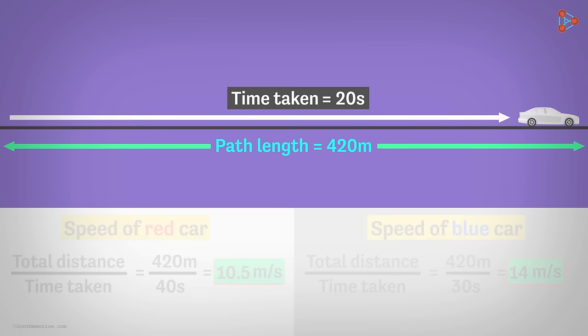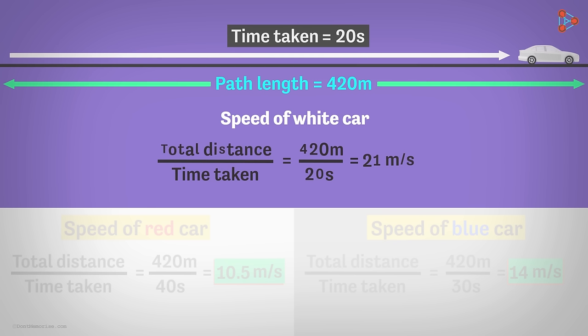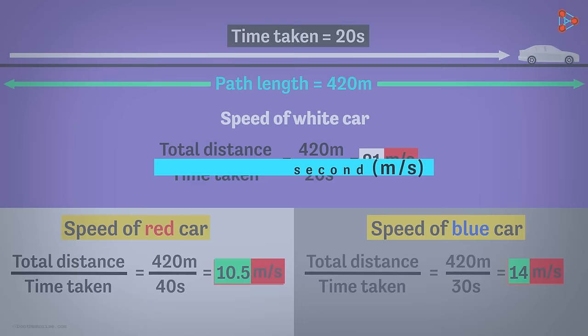Let's bring in a third car which covers the same distance in 20 seconds. So what is its speed then? The speed is 420 meters over 20 seconds which will give us 21 meters per second. And you can see that this ratio is the greatest of all.